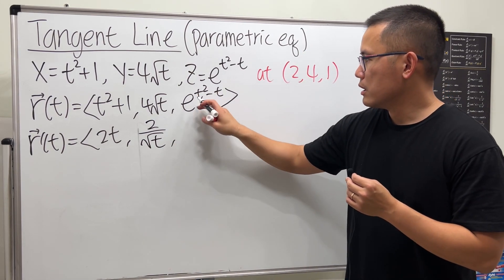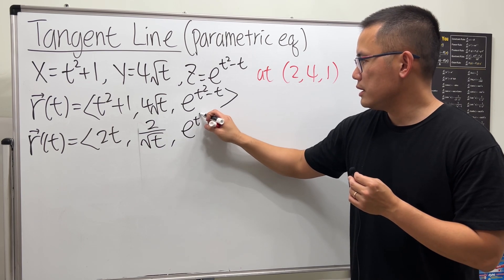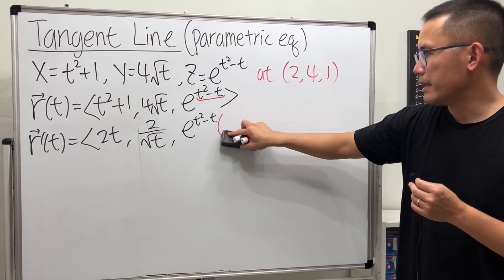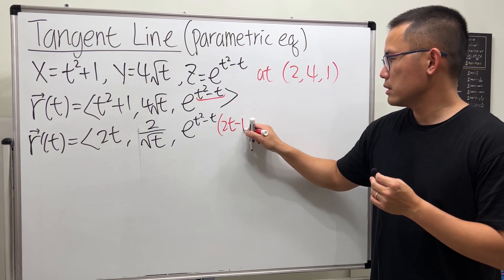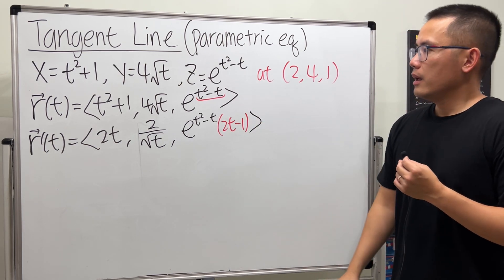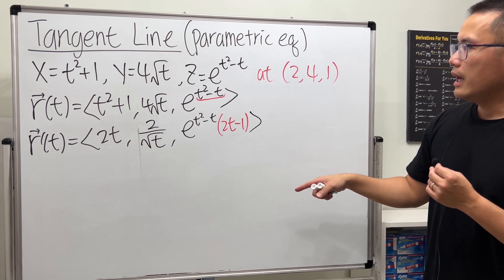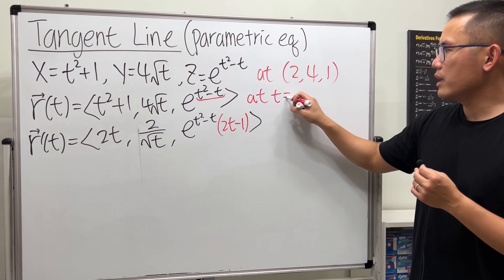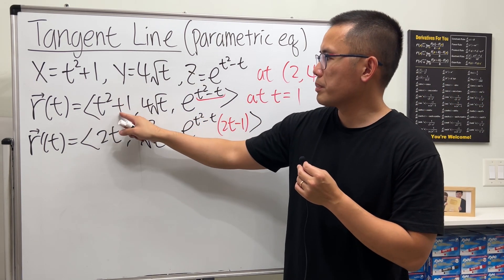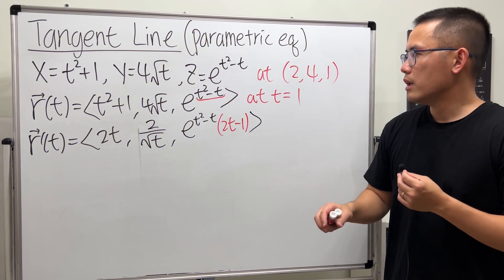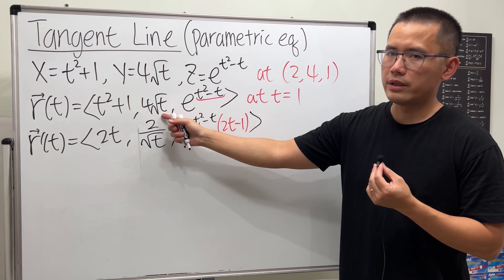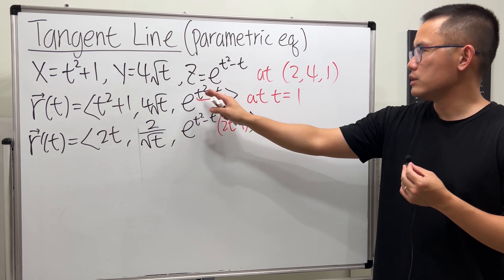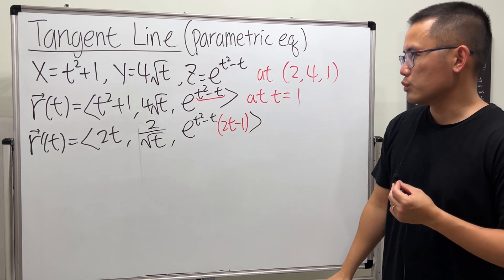For the last component, the derivative of e to the power (T² minus T) requires the chain rule: multiply by 2T minus 1. Now we figure out the T value. Looking at the Z component, if T² plus 1 equals 2, then T is plus or minus 1. Negative 1 doesn't work because square root of negative 1 is not real. With T equals 1, 1 squared minus 1 is 0, and e to the 0 is 1. So the T value is 1.